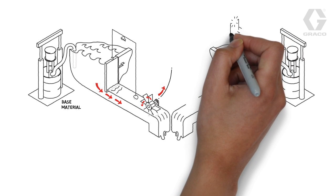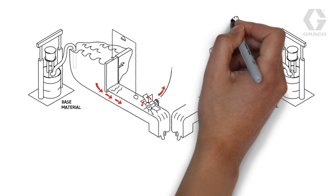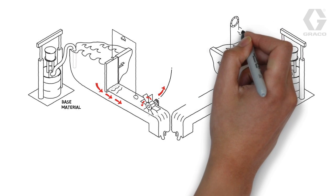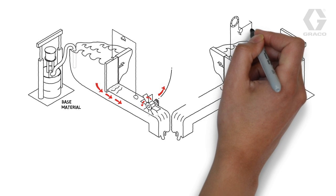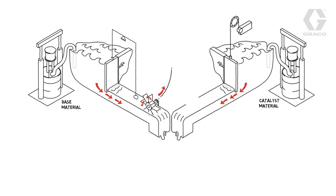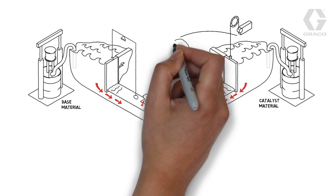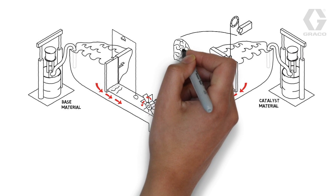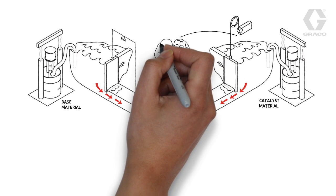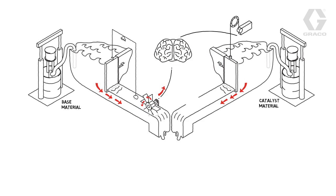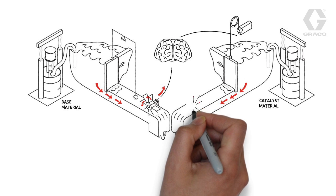Now, to the catalyst side. The catalyst is controlled by a fluid regulator that is controlled by a special device called a voltage-to-pressure device, or V-to-P for short. The V-to-P is controlled by the fluid control module, or FCM. The FCM acts like the system's brain. The catalyst side also has a flow meter.